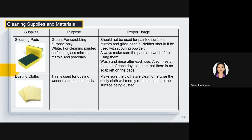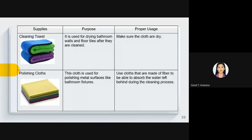Dusting cloth is used for dusting wooden and painted parts. Make sure the cloth is clean; otherwise, it will rub dust into the surface being dusted. Cleaning towel is used for drying bathroom walls and floor tiles after cleaning — make sure the cloth is dry. Polishing cloth is used for polishing metal surfaces like bathroom fixtures; the cloth should be made of fiber to absorb water left during cleaning, and it should also be dry.